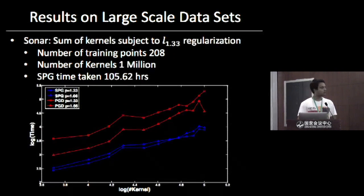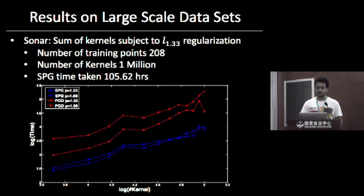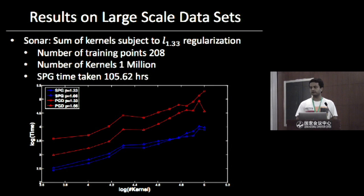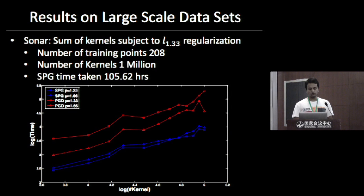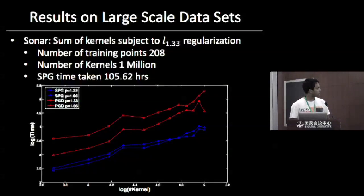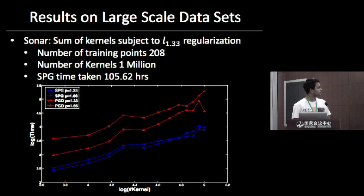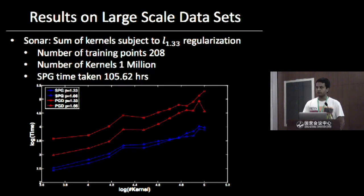Results on Sonar, a small dataset with just 208 data points: we went up to one million kernels. Most current algorithms go up to ten thousand kernels, with the exception of SMOMKL which goes up to a hundred thousand. SPG took around 105 hours to converge. The plot shows how SPG and PGD scale with the number of kernels — both scale linearly, but the constants involved for PGD are very high.